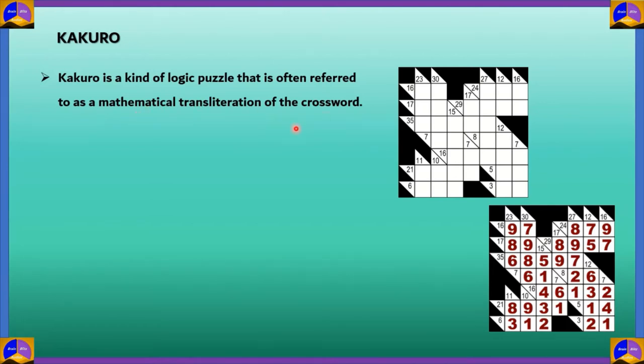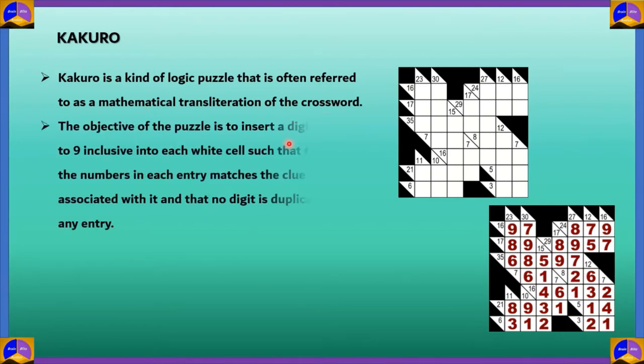In Kakuro, the objective of the puzzle is to insert a digit from 1 to 9 inclusive into each white cell, such that the sum of the numbers in each entry matches the clue associated with it, and that no digit is duplicated in any entry. Therefore, there is no duplication between rows and columns, and you can fill in numbers to get sums.